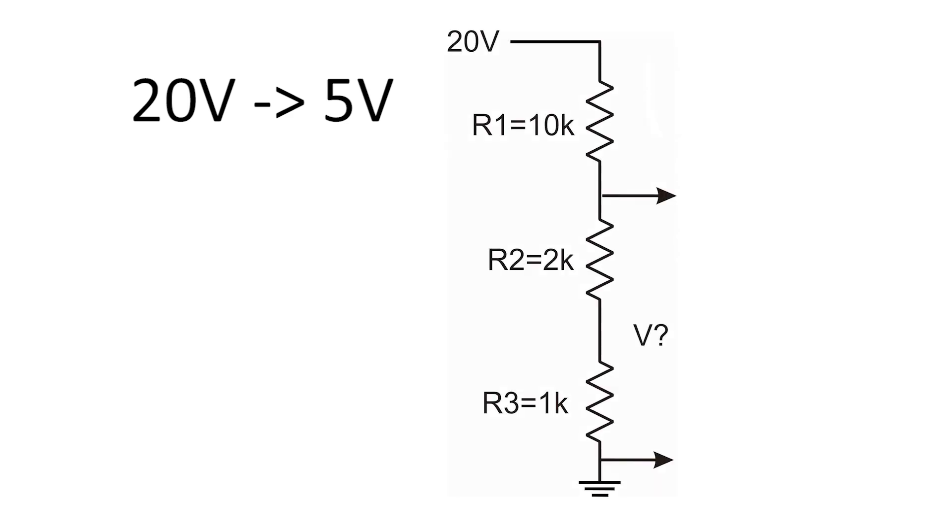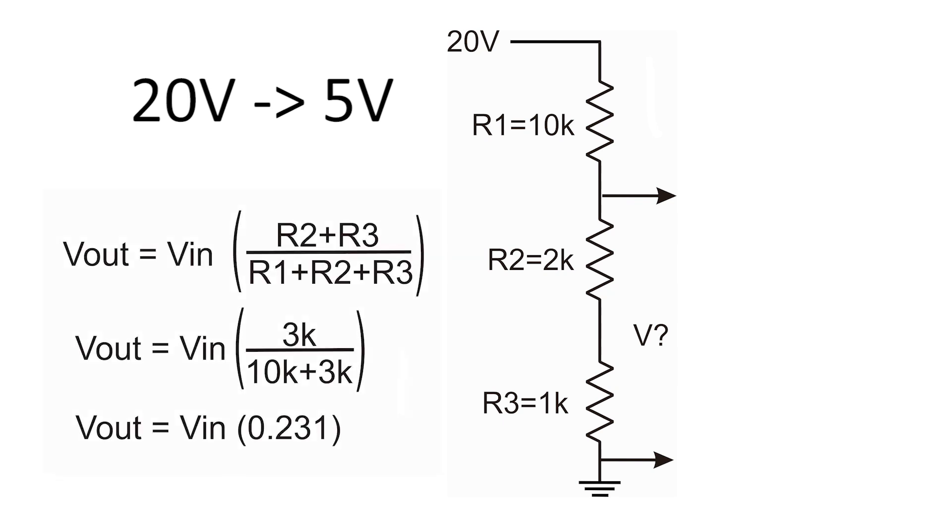So the circuit will be like this. I will take the output between the first and second resistors, so the equation would be like this, and the output is about 0.231 Vin.